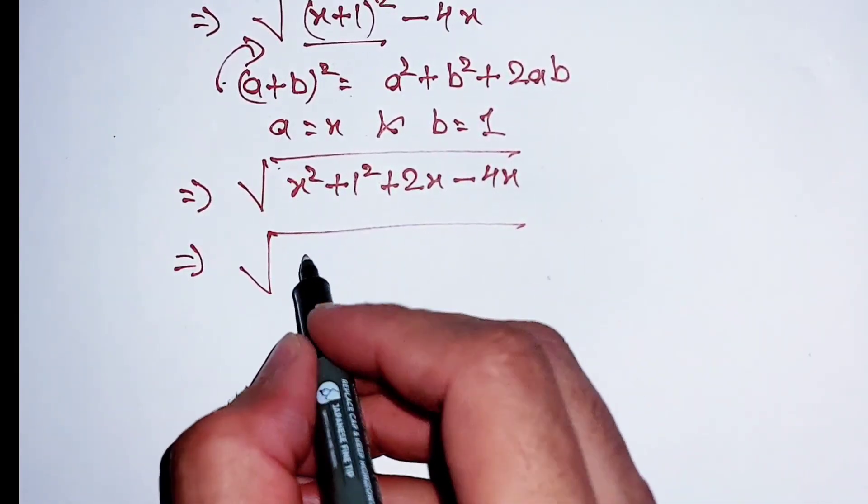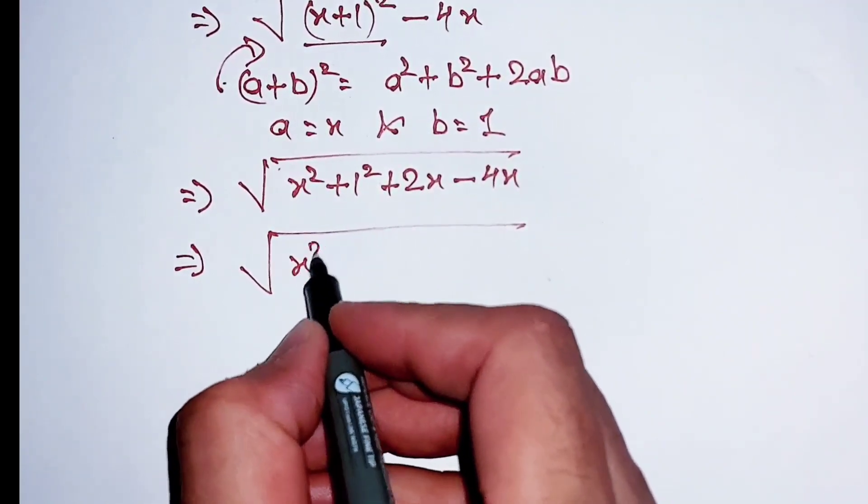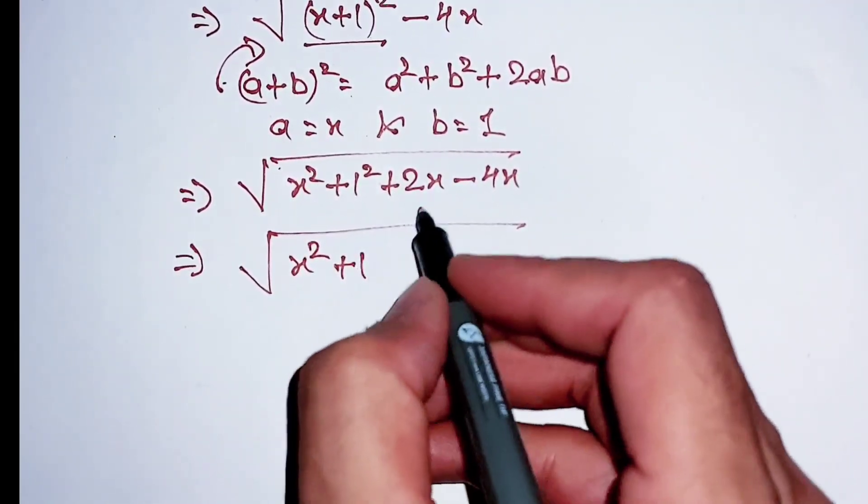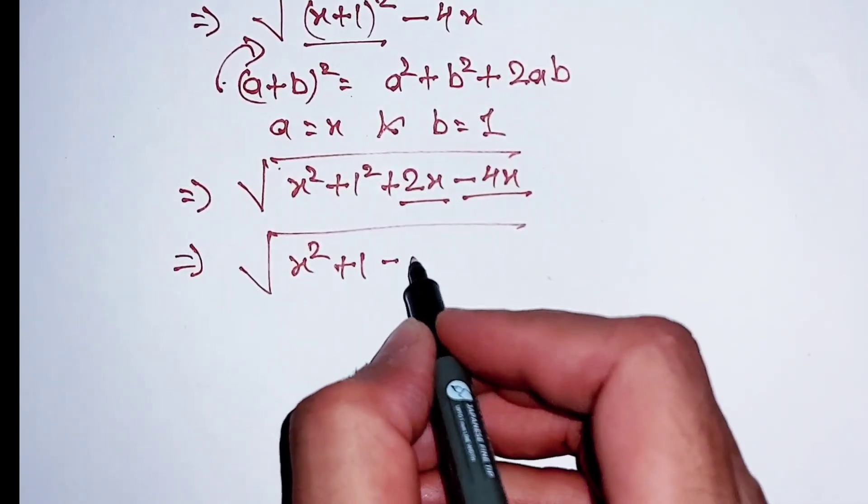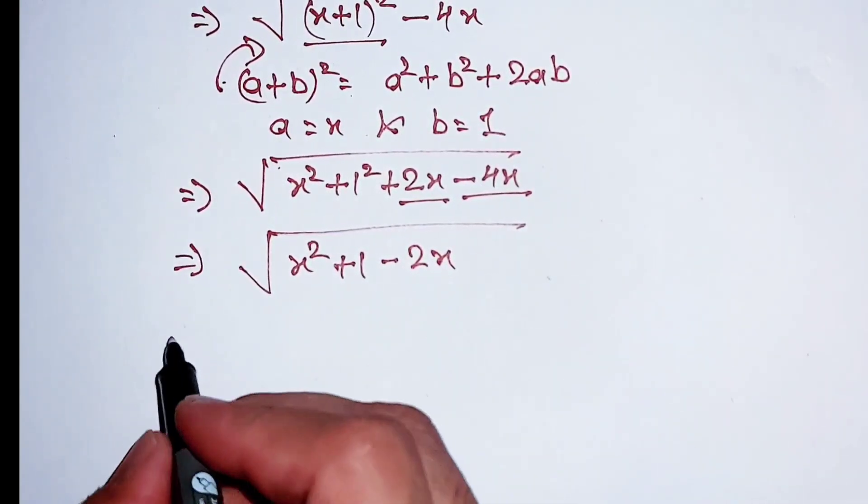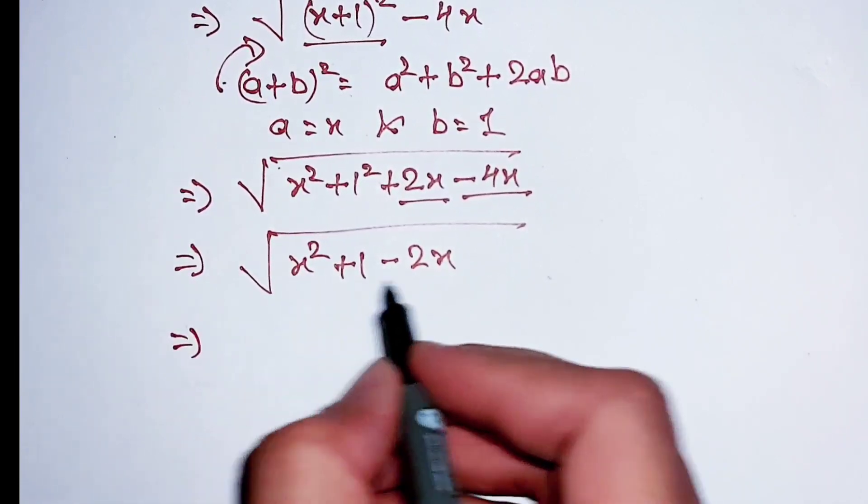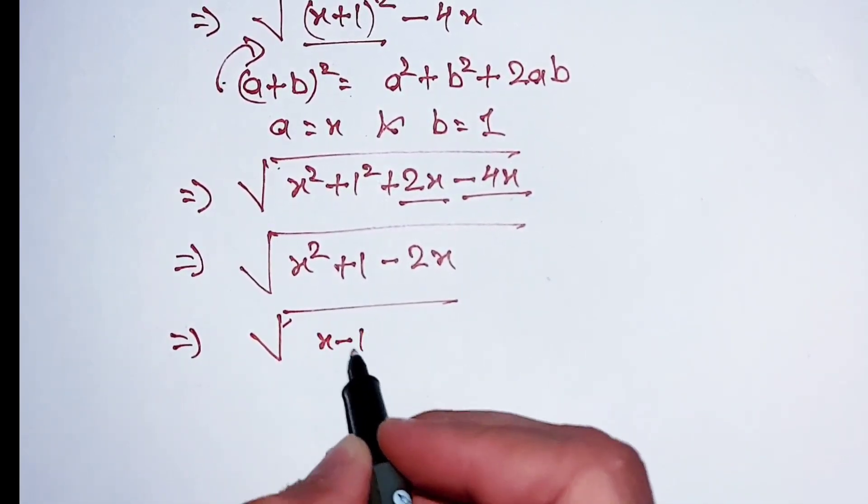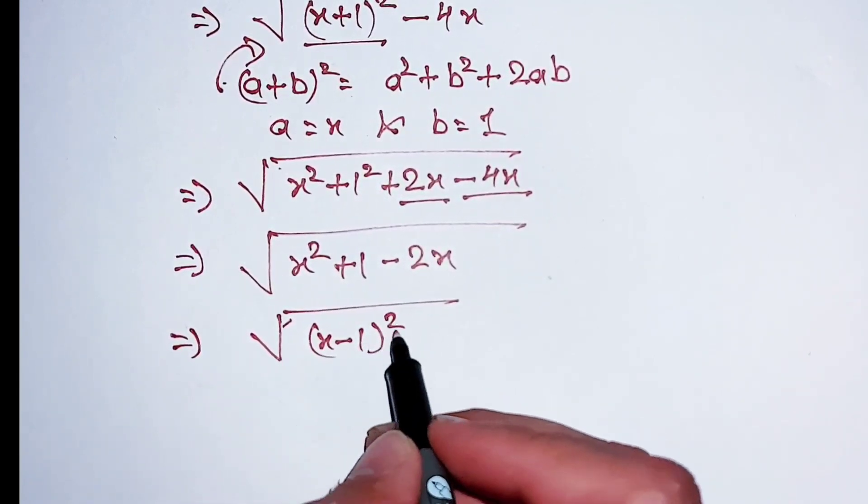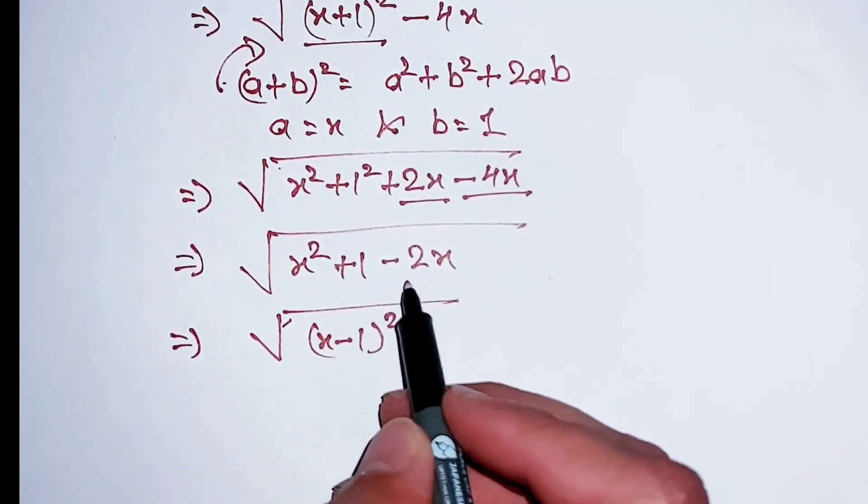Further simplifying this equation: x squared plus 1, and 2x minus 4x equals negative 2x. This is equal to x minus 1 squared, because x minus 1 squared equals x squared plus 1 minus 2x.